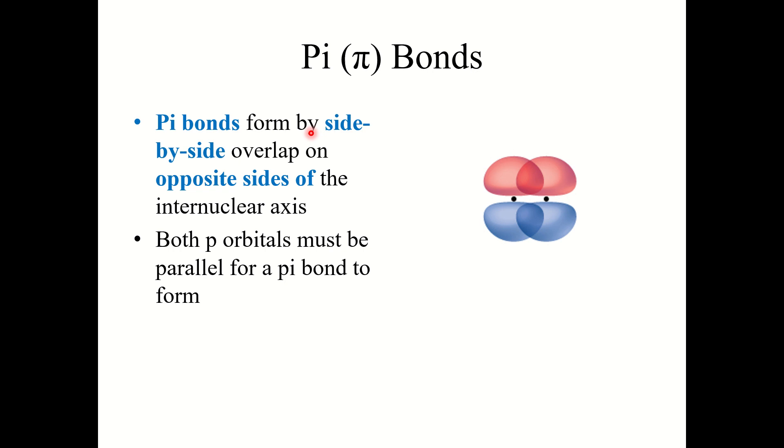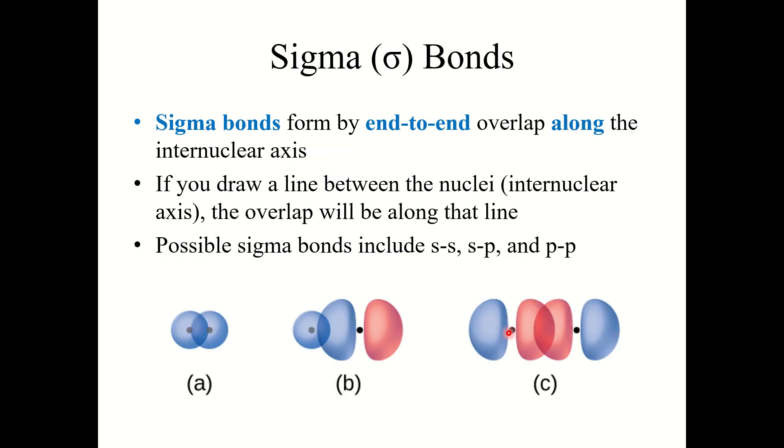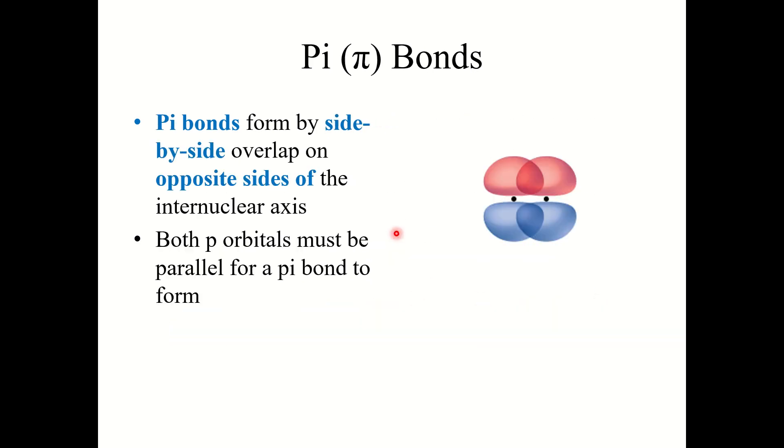The other type of bonds are pi bonds, and pi bonds form by side-to-side overlap on opposite sides of the internuclear axis. So again if we drew that line right along the internuclear axis here with pi bonds, it's side-to-side overlap above and below that internuclear axis. So both p orbitals here must be parallel for a pi bond to form. They run parallel to that internuclear axis instead of being perpendicular to it like we saw with sigma bonds.